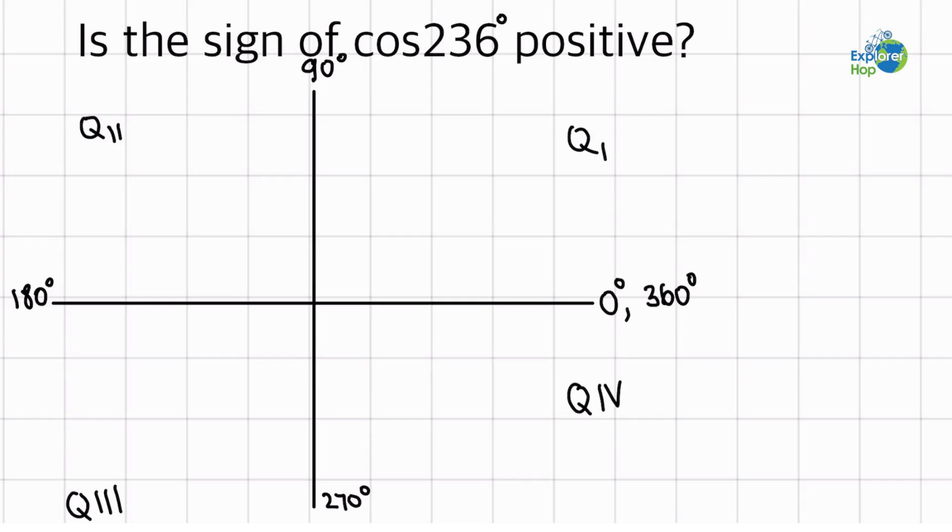So let's remember the CAST rule. So first, in quadrant 4, we have C, which stands for cosine.